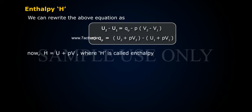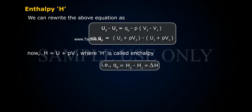Now, H equals U plus PV, where H is called enthalpy. That is, QP equals H2 minus H1 equals delta H.